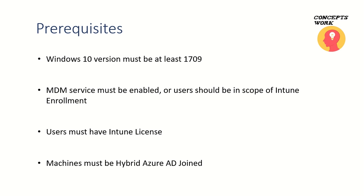When I say properly scoped — when you go to the automatic enrollment section, we select the MDM scope, so make sure you have defined it appropriately. The last and most important prerequisite is that your hybrid machine must have a PRT (Primary Refresh Token) available, meaning it should be an ideal hybrid environment without any issues. Then only will everything work in place.